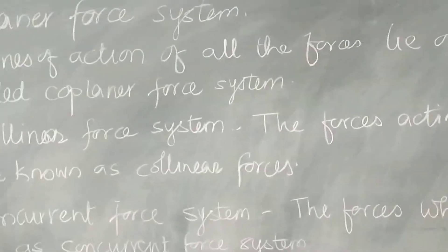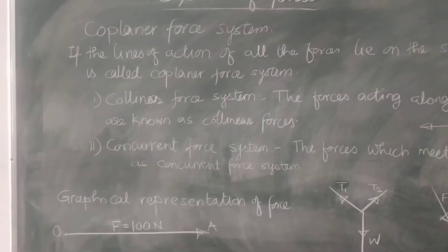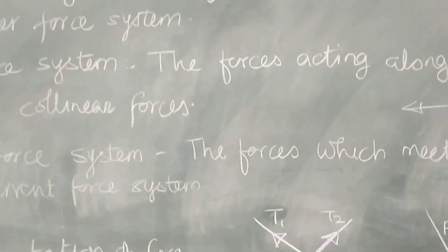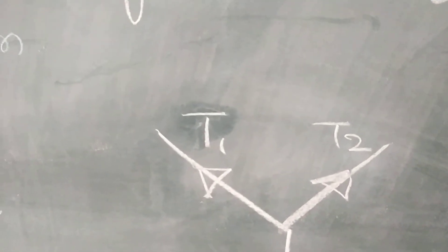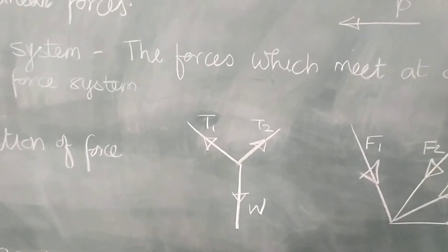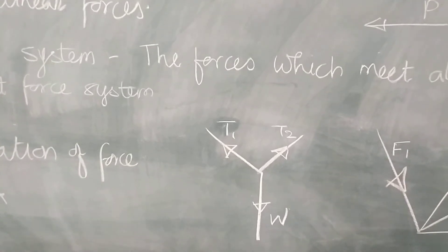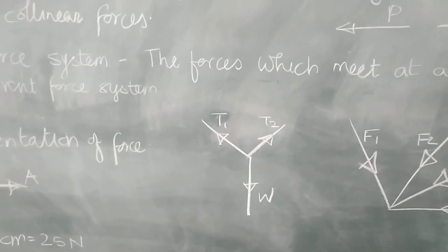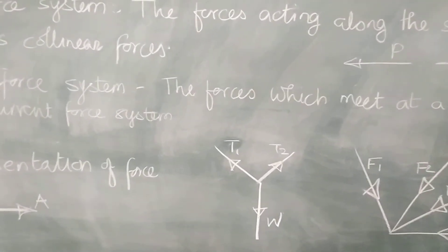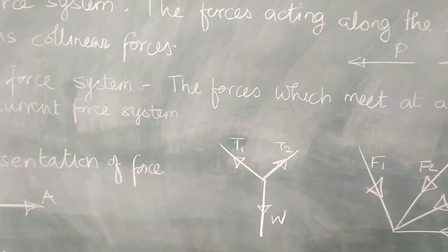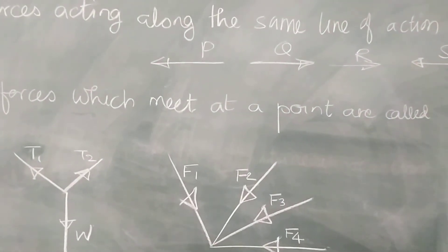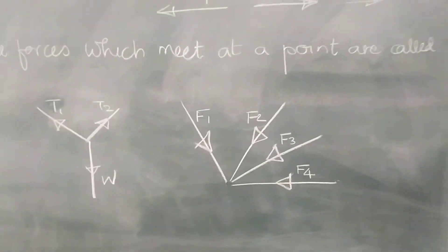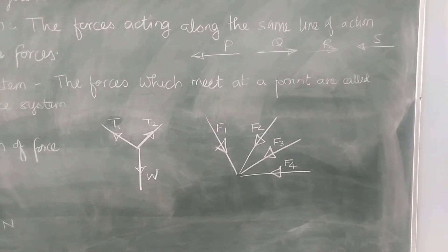The second one is concurrent force system. The force system in which forces meet at a point are called a concurrent force system, acting at that point. These are concurrent force system examples — T1, T2, and W. In our online lecture, I told you about a hanging bulb on a carom board; the weight acts downward and T1 and T2 are the tensions in the string. This is another concurrent force system where all the forces F1, F2, F3, and F4 act on a particular point.